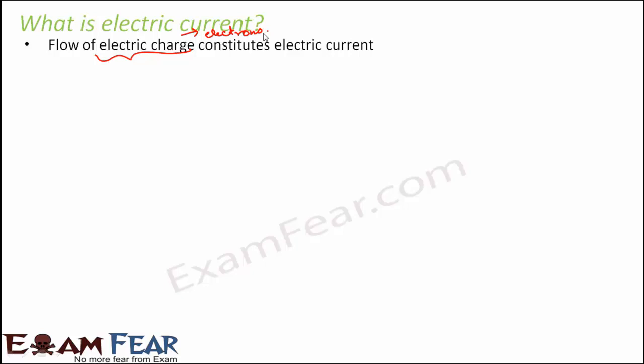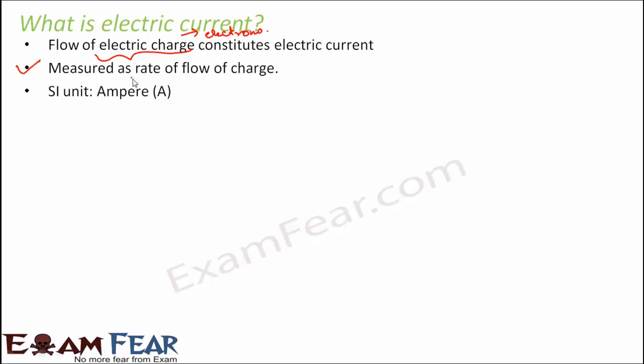To understand this concept, we can assume electrons are like balls or particles. Electric current is measured as the rate of flow of charge. How fast these particles — the electrons — are moving determines how much electric current there is: moving fast means more current, moving slow means less current. The unit to measure electric current is the ampere, denoted by capital A, so we define amounts like 5 amperes, 10 amperes, and so on.